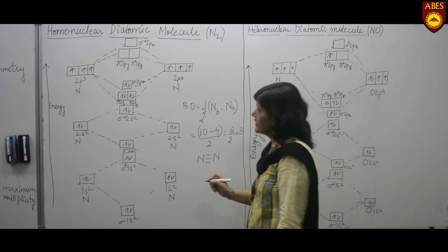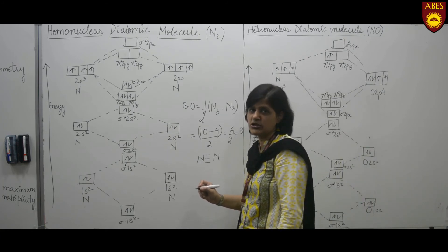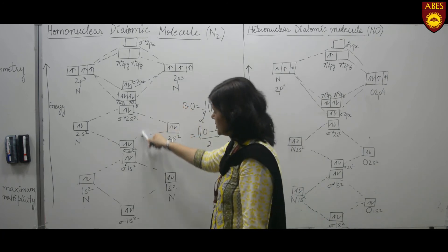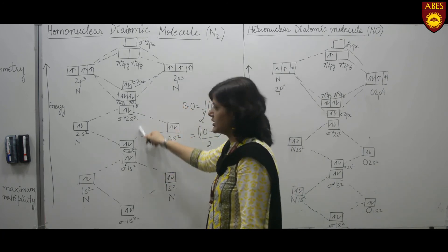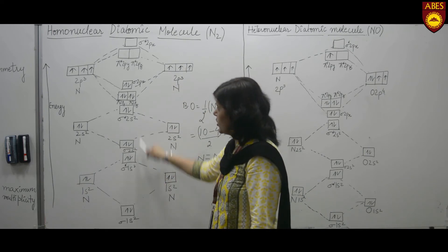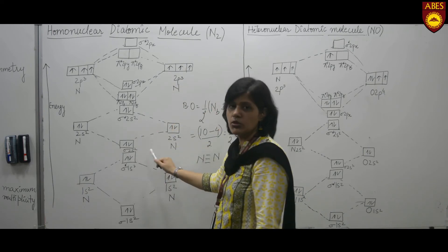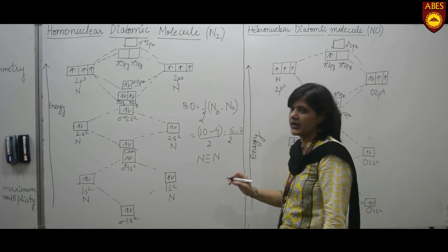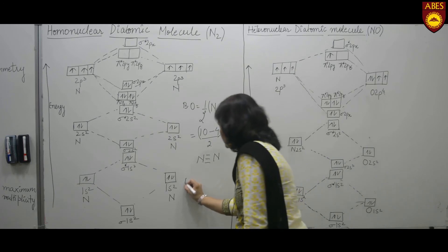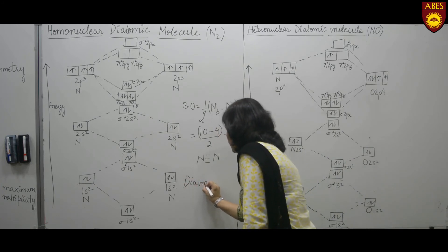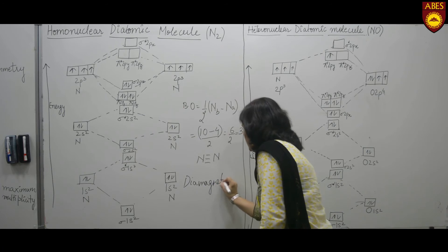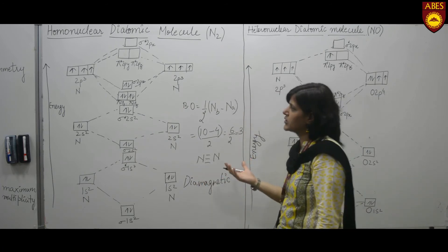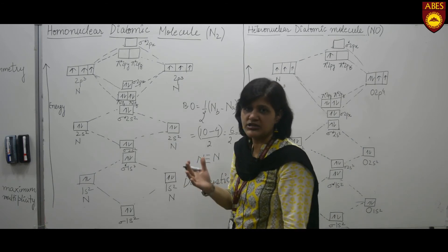Now let's calculate the magnetic behavior of the molecule on the basis of molecular orbital theory. In all the orbitals of the N₂ molecule, there are no unpaired electrons — all electrons are paired. That is why the nitrogen molecule is diamagnetic in nature. If there is one unpaired electron, then it will be paramagnetic in nature.